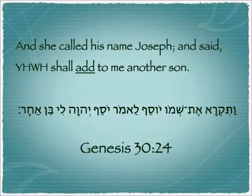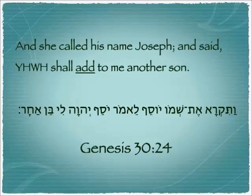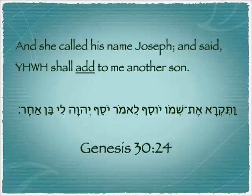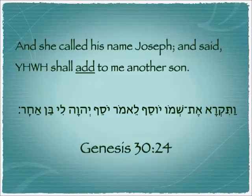Here is how Joseph came by his name. You remember that there was rivalry between Leah and Rachel. Rachel was unable to conceive, and finally she has a child in Genesis 30:24: 'And she called his name Joseph and said, Yahweh shall add to me another son.' In the Hebrew: 'he will add to me, he will give to me another son.'